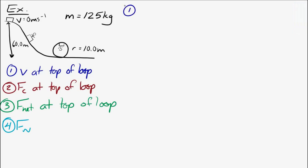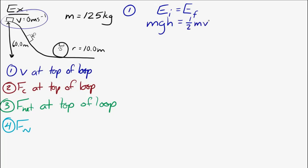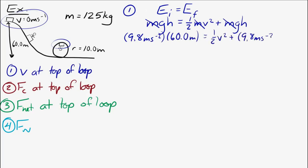To find the speed at the top of the loop, we use energy conservation, assuming no air resistance, no friction — a closed system. So initial energy equals final energy. The initial energy is just gravitational potential energy. The final energy is kinetic energy plus gravitational potential energy. The masses cancel out. For the final height, note that the top of the loop is two radii above the ground, so the final height is 20 meters, not 10.